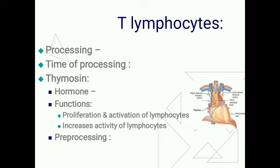During pre-processing, T lymphocytes develop extreme diversity for reacting against different specific antigens — one thymic lymphocyte develops reactivity against one antigen, the next against another. The second thing that occurs during pre-processing is that the thymus ensures any T lymphocyte leaving the thymus will not react against proteins or antigens present in the body's own tissue; otherwise these T lymphocytes would damage the person's own tissue.